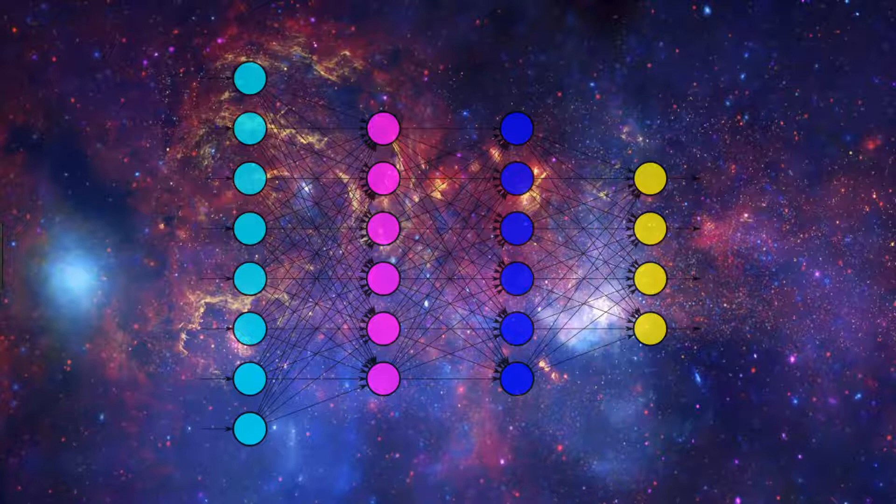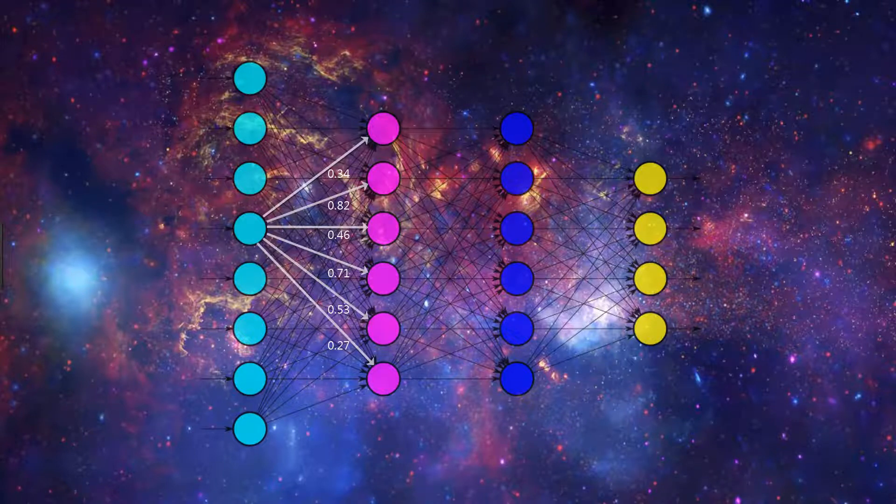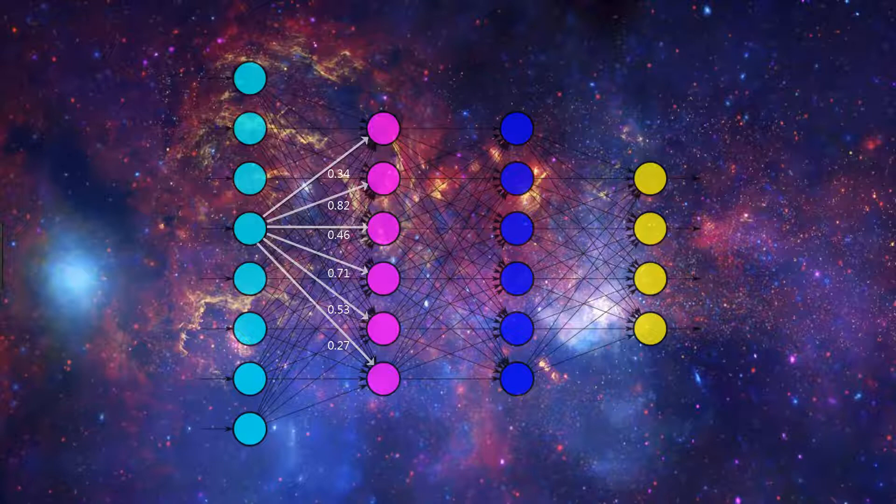This is because when we train a model, the weights for our model are first initialized with random numbers. Due to this random initialization, when we train the model, the weights are going to start off with different random values and then will dynamically change during training via gradient descent.